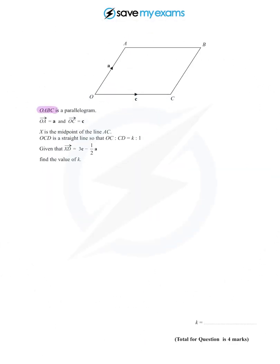We have OABC is a parallelogram. The vector from O to A is called little a, and the vector from O to A is little a.